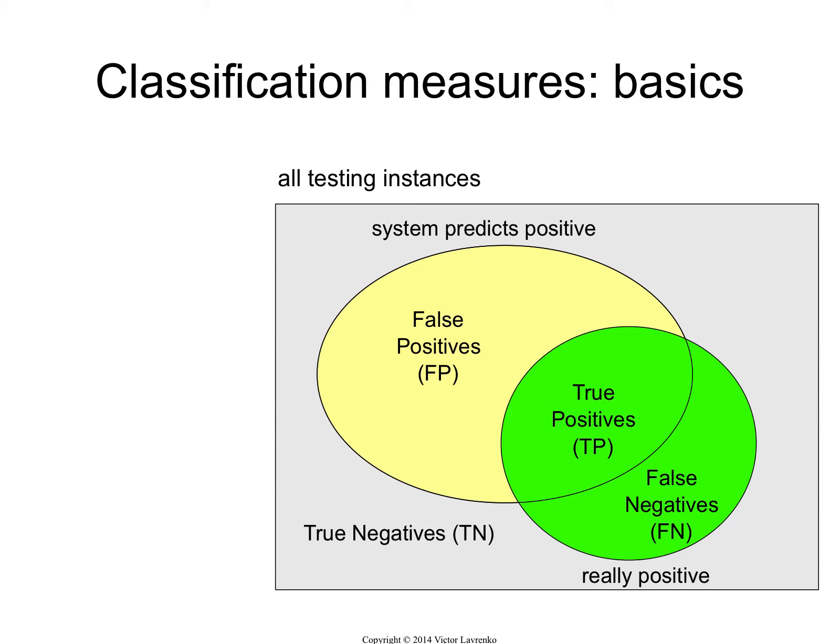False negatives is the flip side of that. They're really positives, but my system thought that they were negative. My system said these are ham emails, but in fact they're really spam — so these are false negatives.